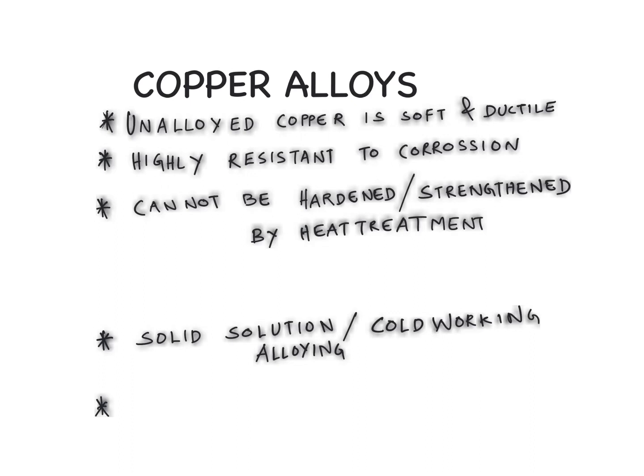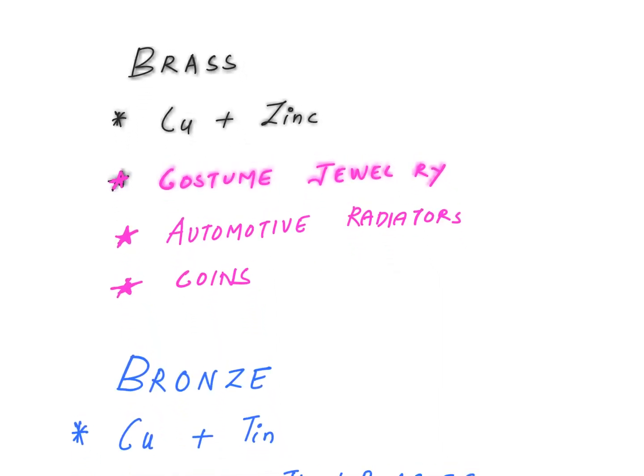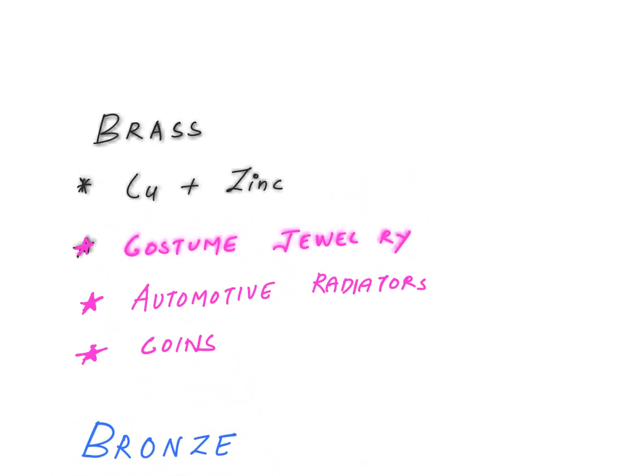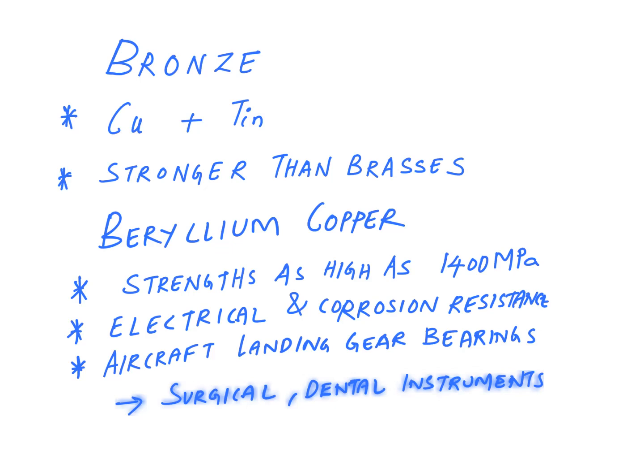A few examples of copper alloys: the first is brass, which is an alloy of copper and zinc. It is not that strong but has very good corrosion properties. It is used in costume jewelry, automotive radiators, and to make coins. Another copper alloy is bronze, which is stronger than brass and also has good capability to prevent corrosion.